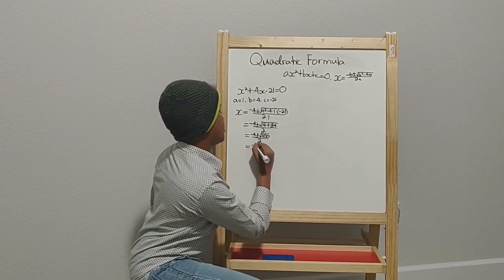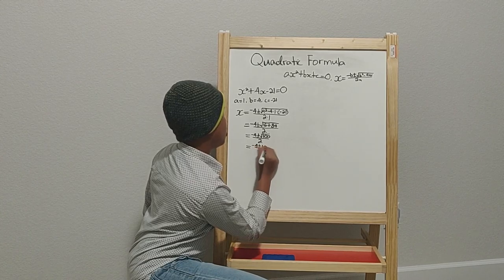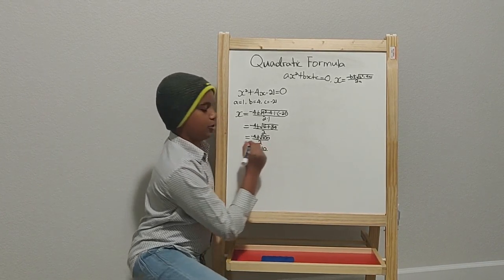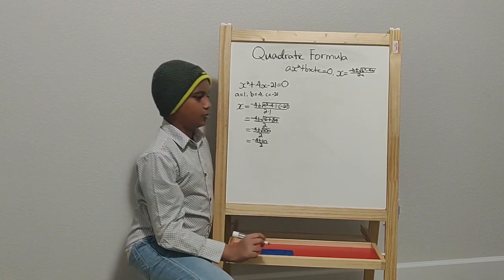And then it equals negative 4 plus or minus 10 over 2. As you know, the square root of 100 is 10. And now you have this.